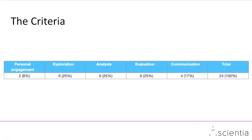The criteria for the Physics IA consist of five components: personal engagement, exploration, analysis, evaluation, and communication. They all add up to 24 marks total.